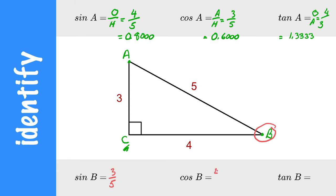Cosine would be adjacent over hypotenuse. And tangent would be opposite over adjacent.